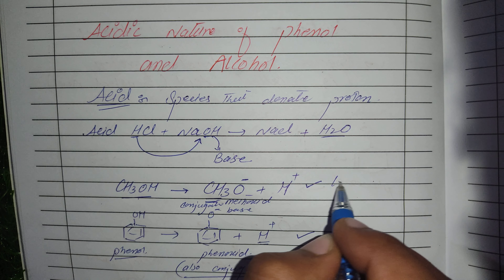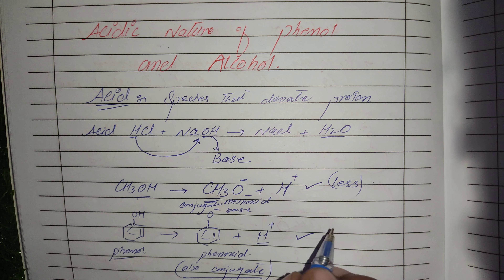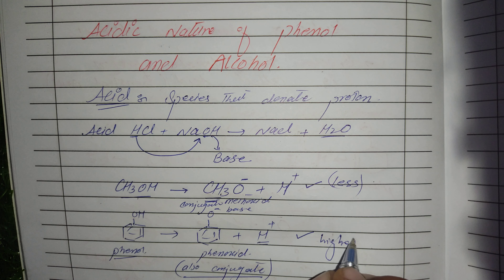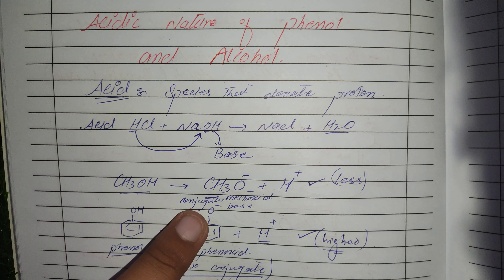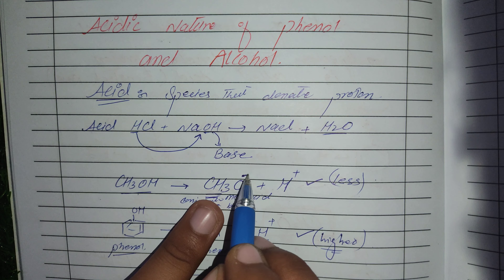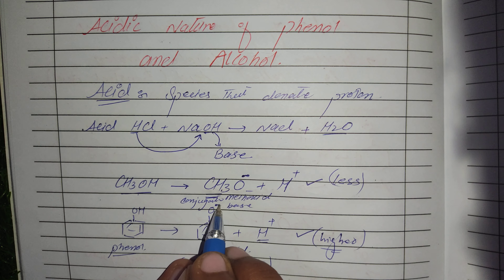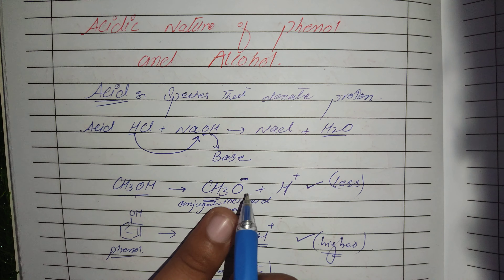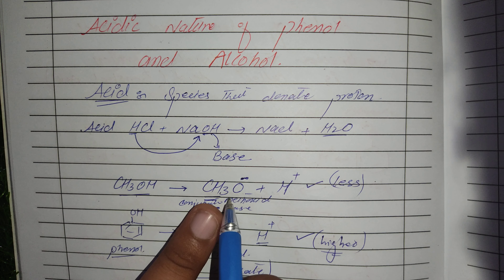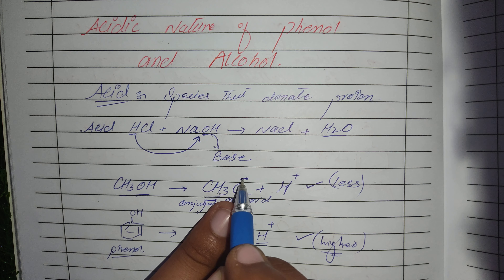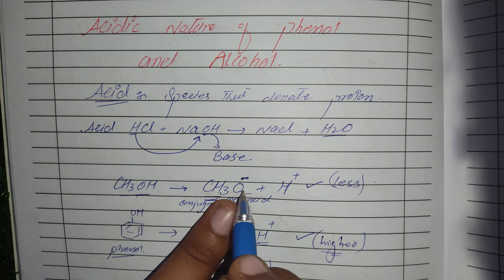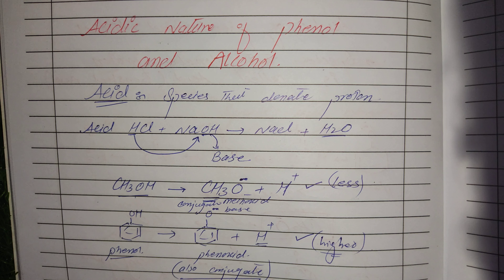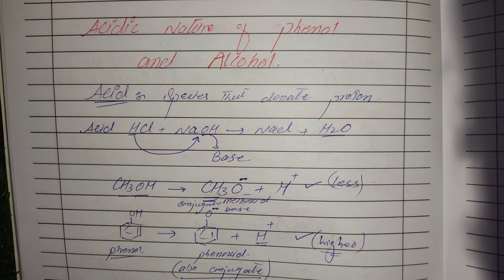Methanol is less acidic in nature, while the acidic strength of phenol is higher compared to methanol. The main reason behind this is the stability of the conjugate base. In methoxide, the oxygen atom has a lone pair of electrons that is localized on the oxygen atom, making it less stable and more reactive than phenoxide. Phenoxide, on the other hand, is stabilized by resonance.